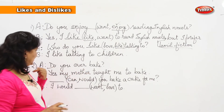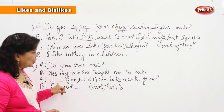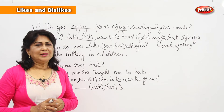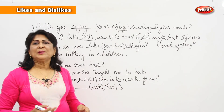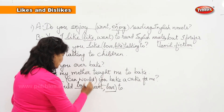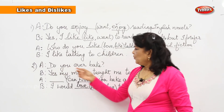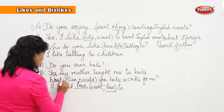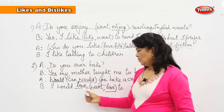Next dialogue — A asks: do you ever bake? B says: yes, my mother taught me to bake. A then asks: would you bake a cake for me? If A had said 'can you bake' it refers to ability, but 'would you bake' is a polite request. B answers: I would love to. So 'would you' becomes a very polite request.